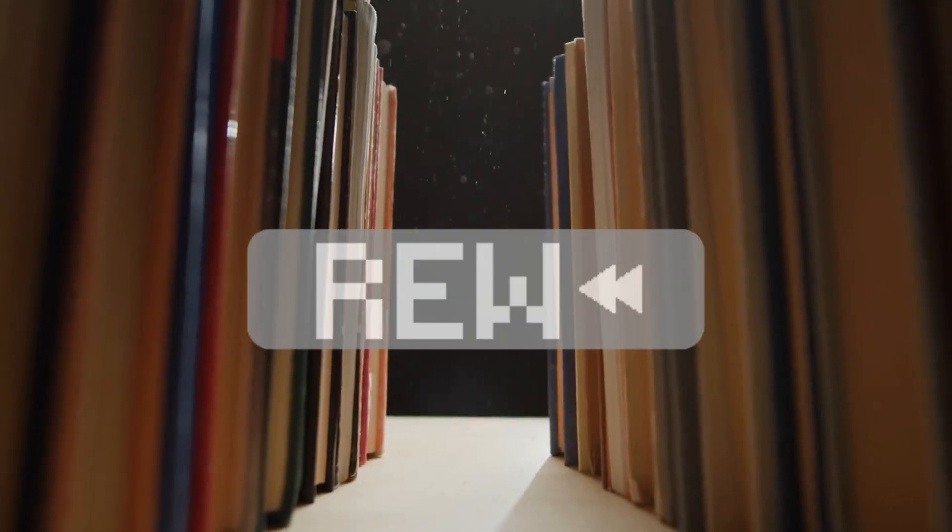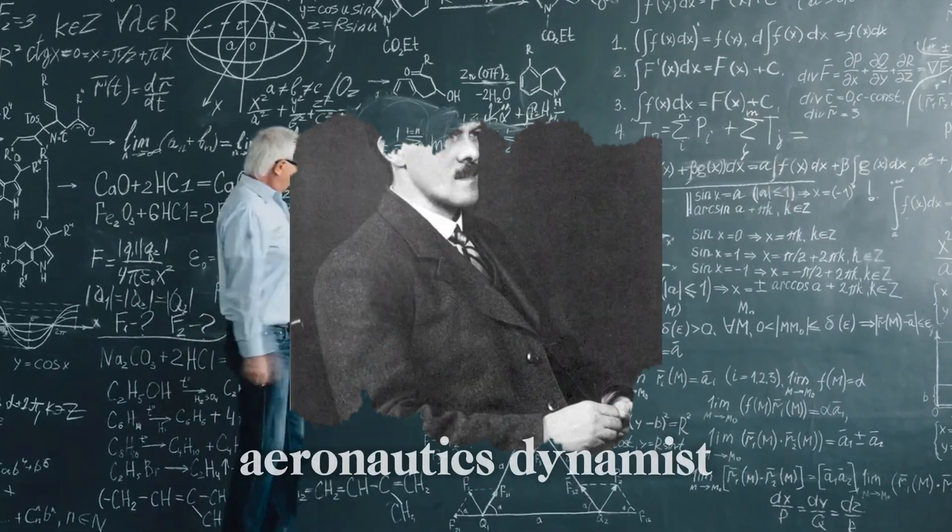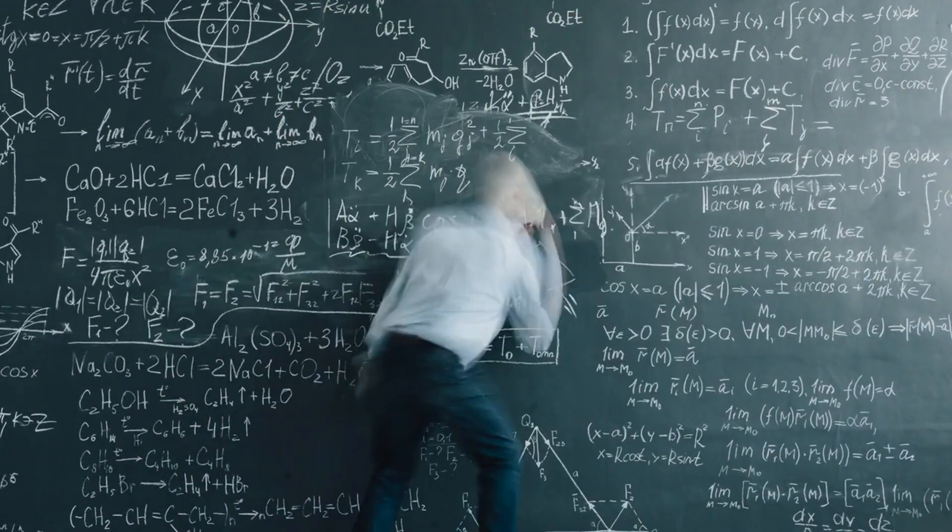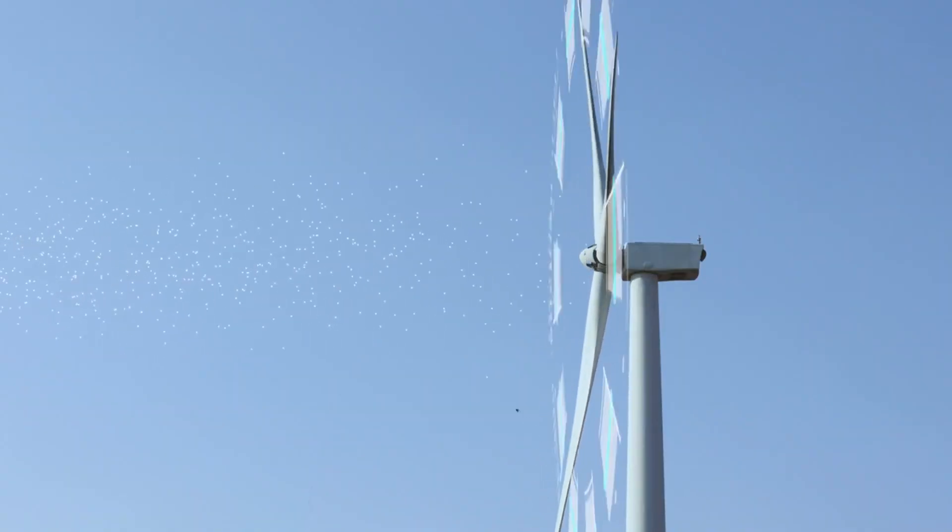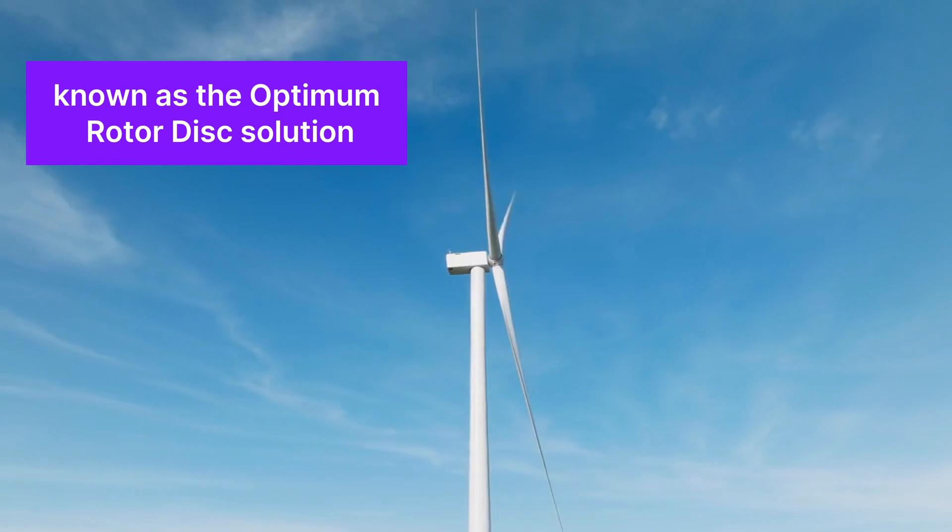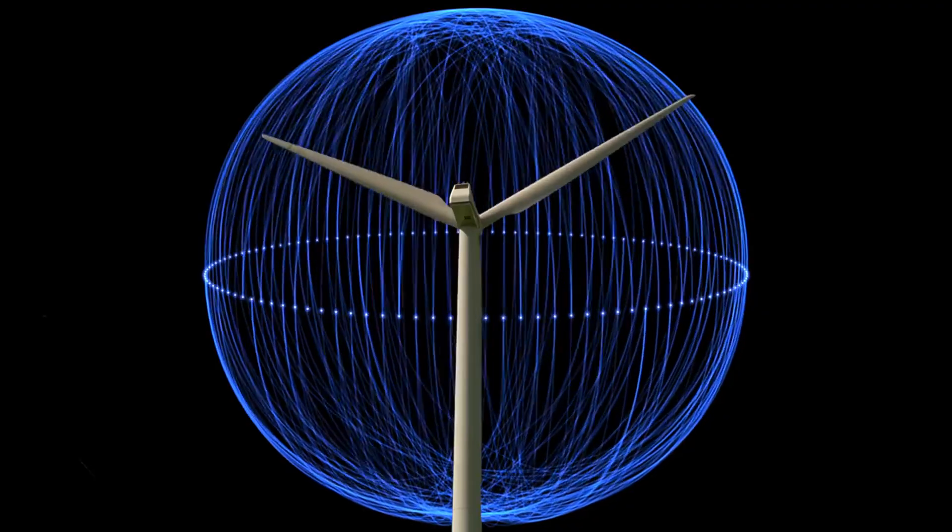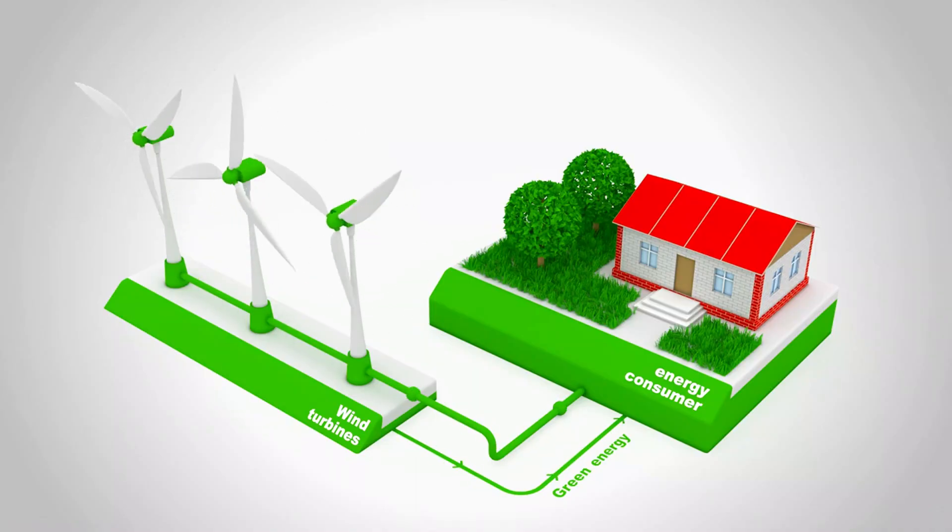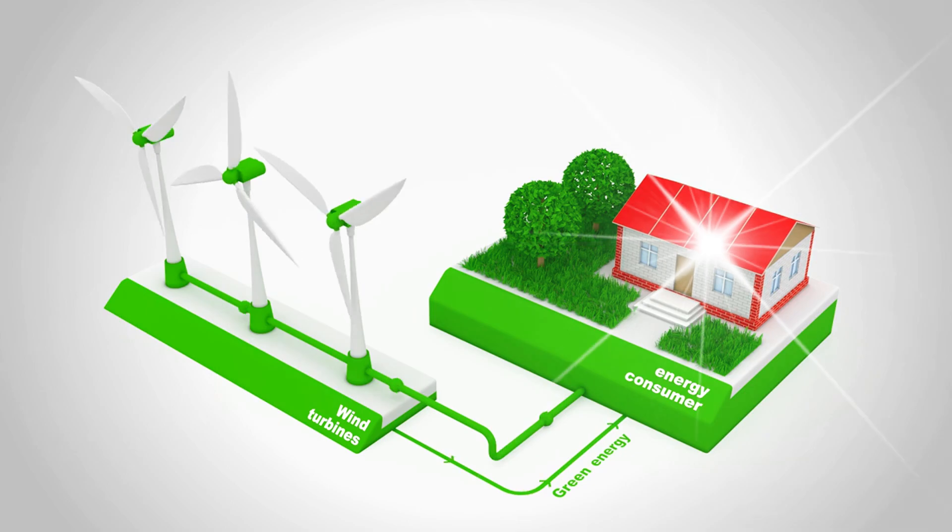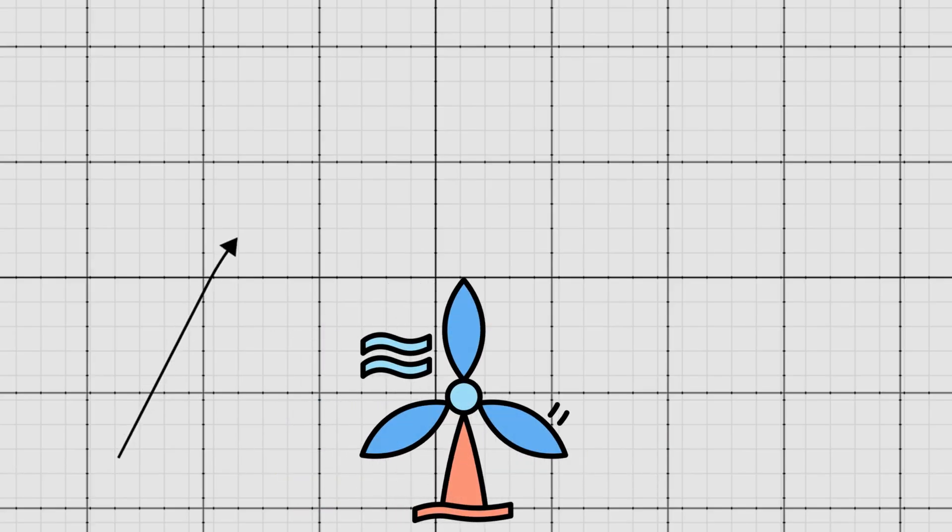Let's rewind a bit. Over 100 years ago, a British aerodynamicist named Herman Glauert developed a formula that would define wind energy capture for generations. Known as the optimum rotor disk solution, it basically stated the theoretical limits of how efficiently a wind turbine could convert wind energy into electricity. For decades, this was the ceiling, the theoretical limit that engineers around the world worked within.